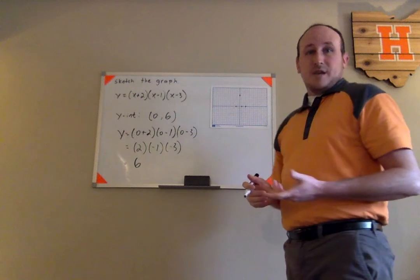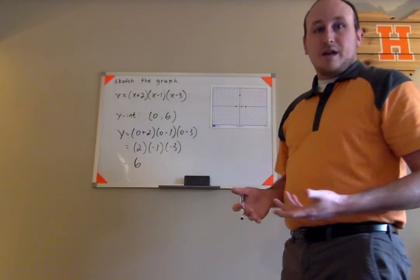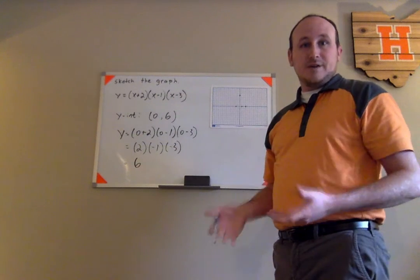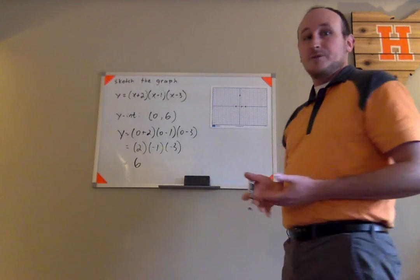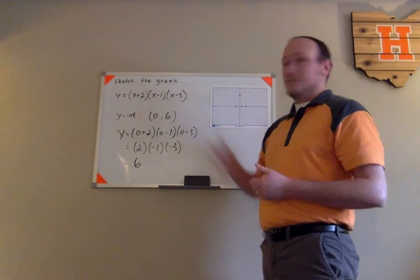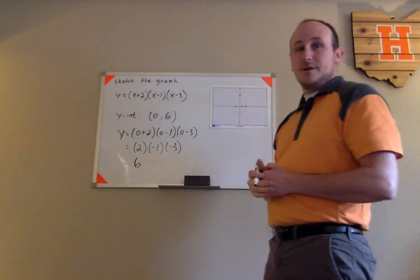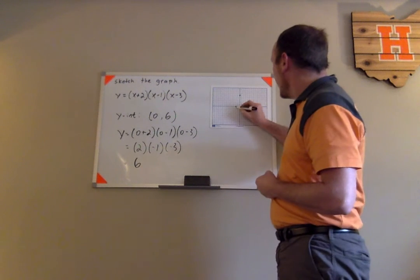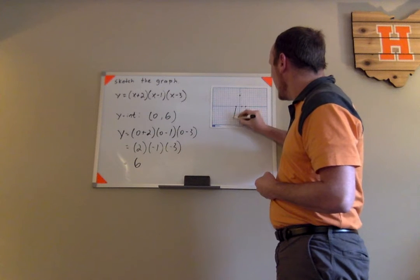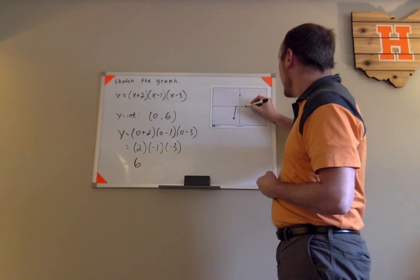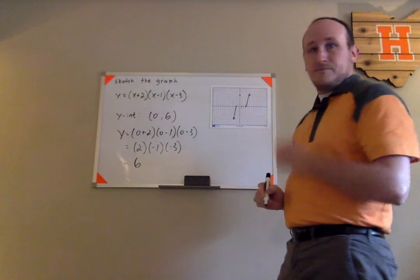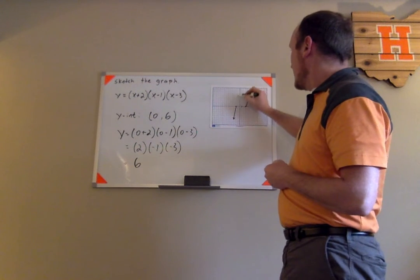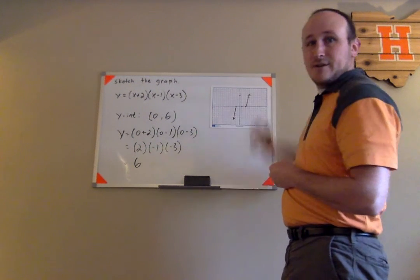Now I'll talk about end behavior. Since this has three linear factors, multiplying them out gives a cubic polynomial function with a leading coefficient of positive one. For a cubic with a positive leading coefficient, the left end of the graph goes down and the right end goes up. So this graph will go back and forth through these points — up, then back down like this.